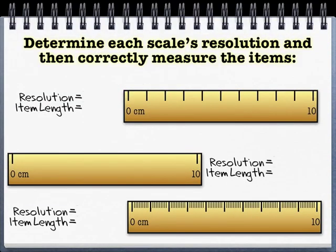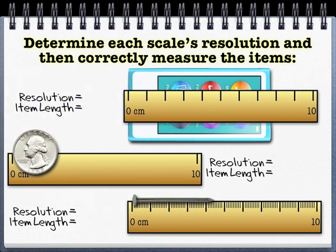So we can look at a couple quick examples here. We've got three common items here. I think we have an iPod Nano, a quarter, and a nail. The resolution on the first scale we already know, and then that length is going to be about, well, it's between 7 and 8, so I said 7.7 centimeters.